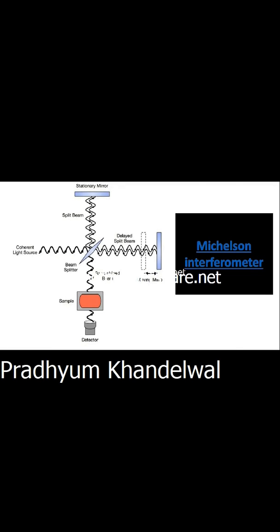Now we will talk about the Michelson interferometer. It has a stationary mirror and a moving mirror. When light enters, the beam splitter splits it into two beams that go to mirrors perpendicular to each other — one gets refracted and one gets reflected. The reflected beam and the refracted beam, which is delayed due to the medium, recombine to give destructive or constructive interference. This is used to create the background spectrum, and the moving mirror is used to control the spectrum.